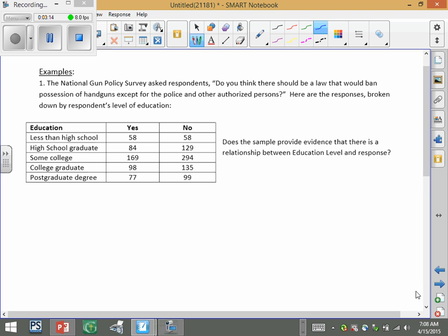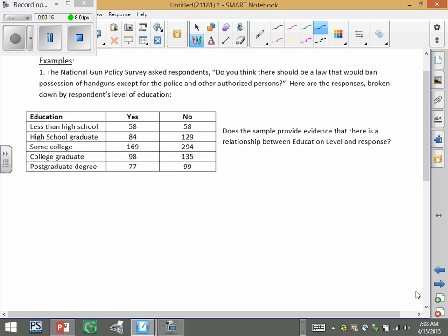So let's just try one to get the feel for what's going on here. So the national gun policy asks people, do you think there should be laws that would ban possession of handguns except for police and other authorized people? So here are the responses. So basically, we have a two-way table. We have responses versus education level. So here is there a relationship. So we're doing a chi-squared test for independence.